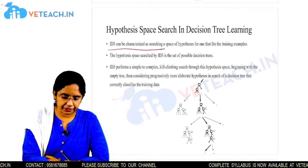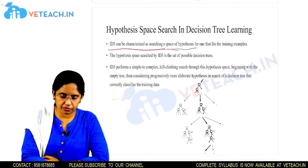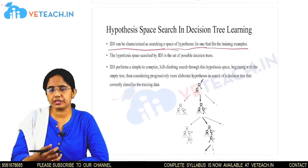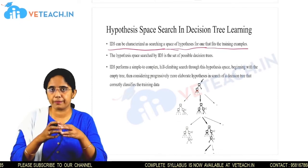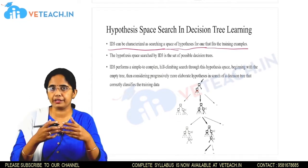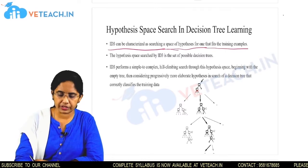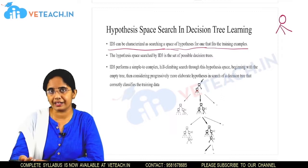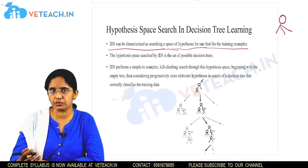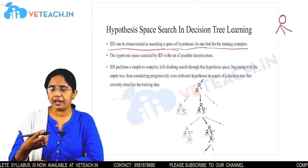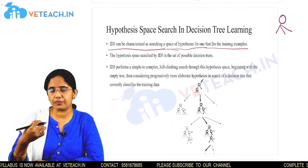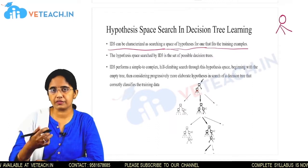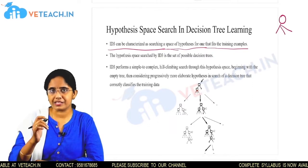ID3 can be characterized as searching a space of hypotheses for one that fits the training examples. Given a training data set, we try to construct a tree starting from the root, then perform heuristics like calculating the information gain and Gini index value. The attribute with the highest information gain is considered the best attribute, and we split the data set based on that attribute.